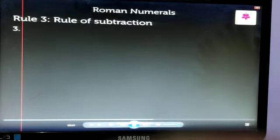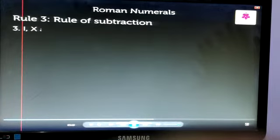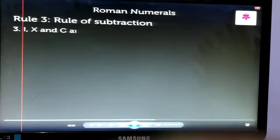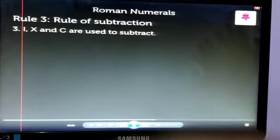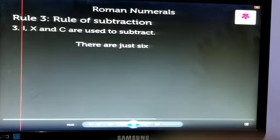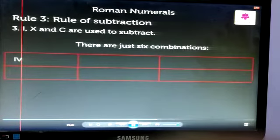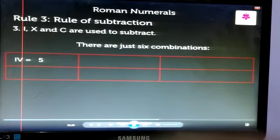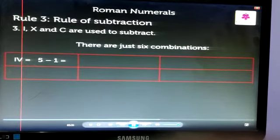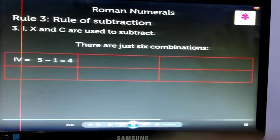I, X, and C are used to subtract. There are just 6 combinations. IV is equal to 5 minus 1, which equals 4. IX is equal to 10 minus 1, which equals 9.